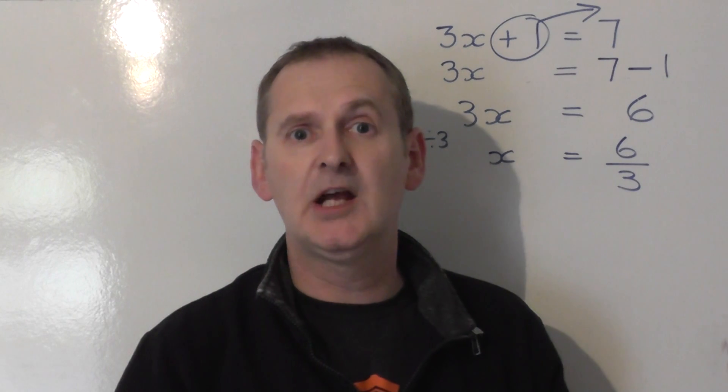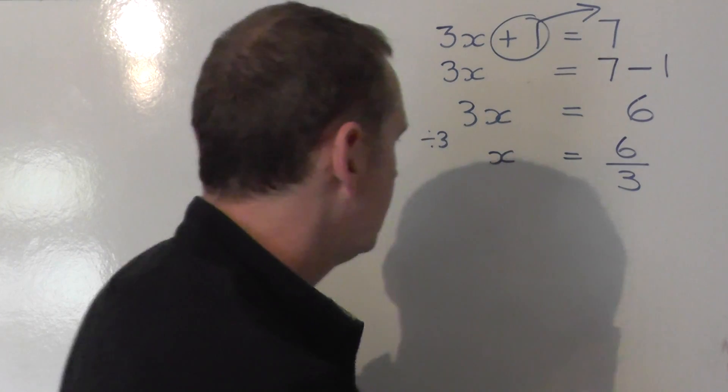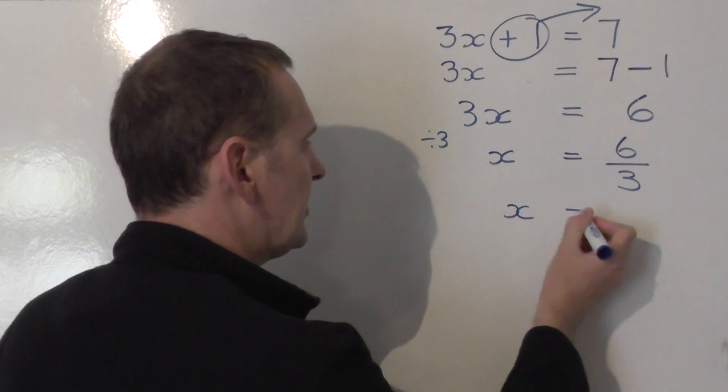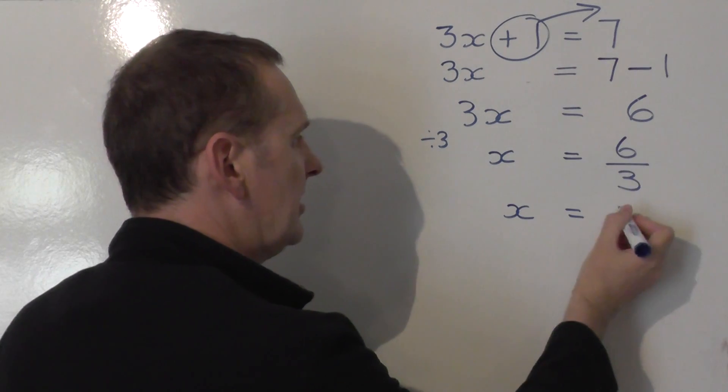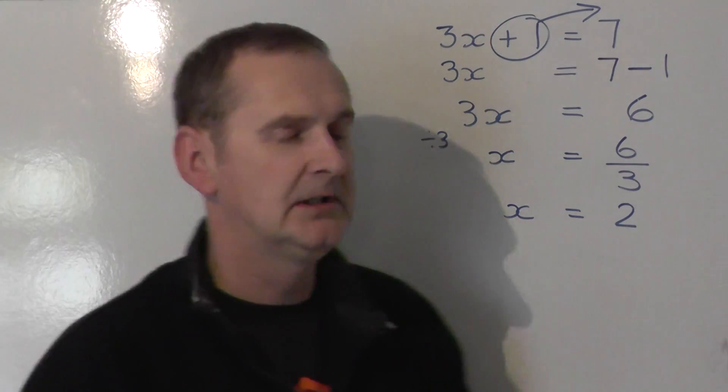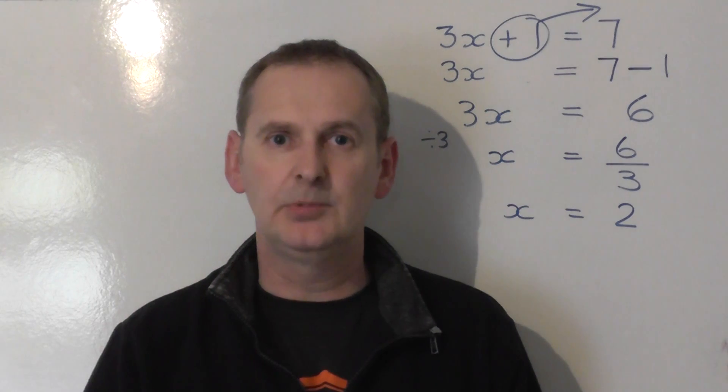And finally now, simply work out what 6 share by 3 is. So we get on the left hand side that x is equal to, and 6 share by 3 gives you an answer of 2. And that's the solution to this simple equation.